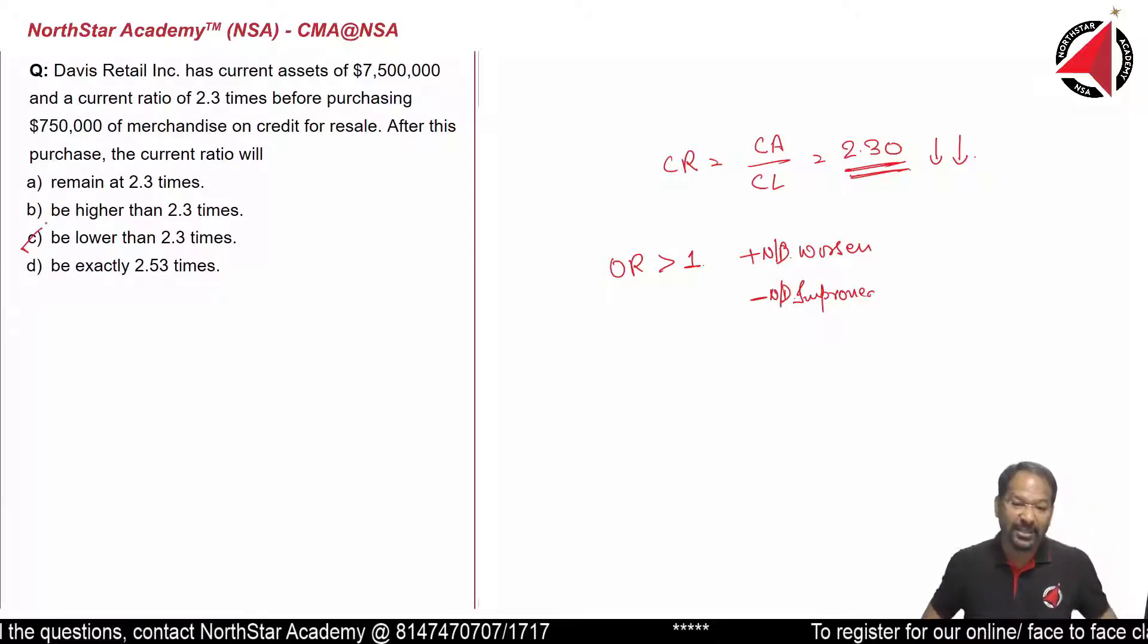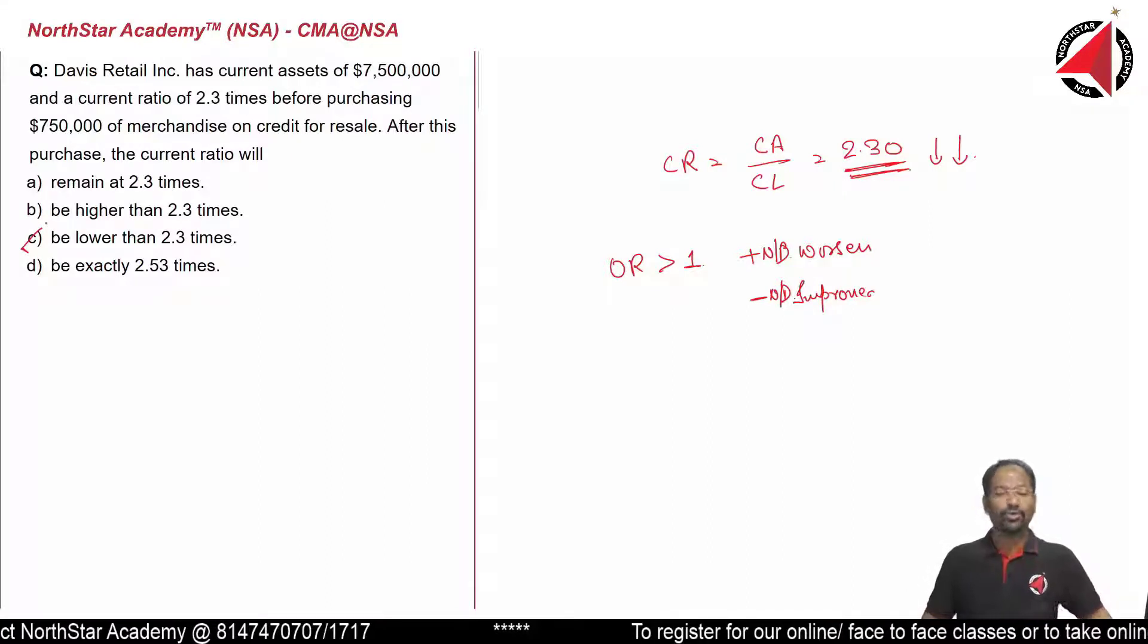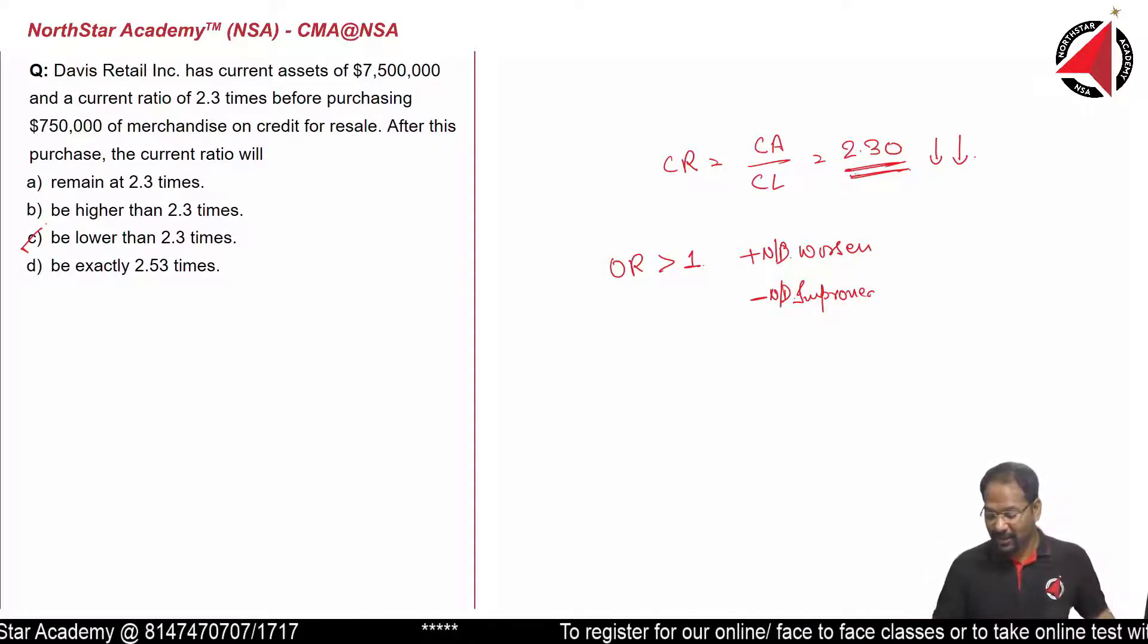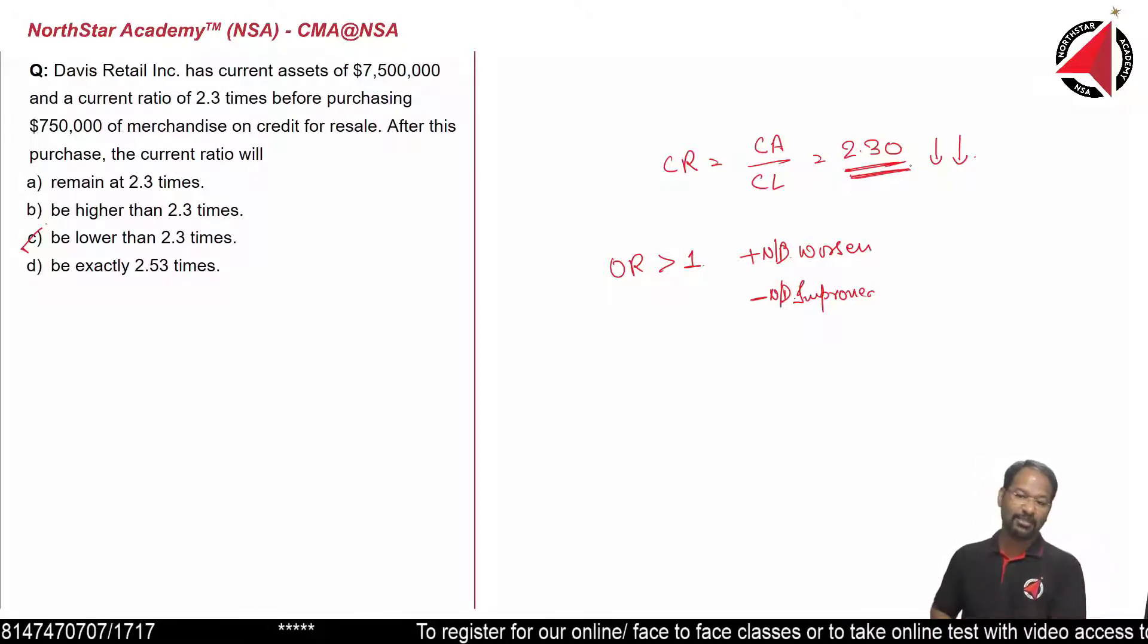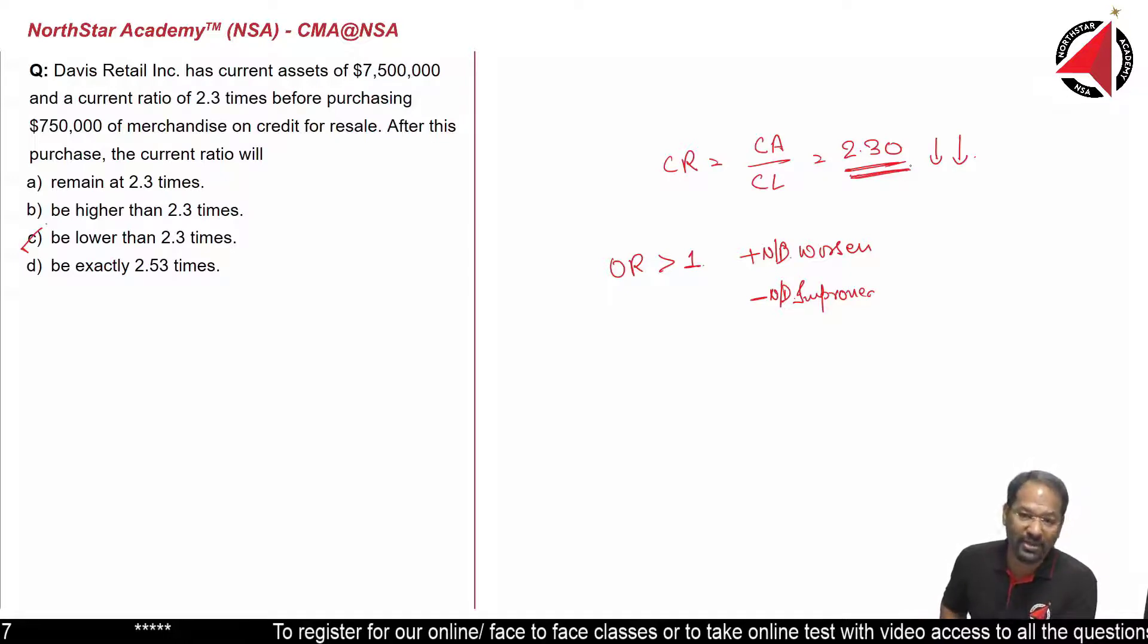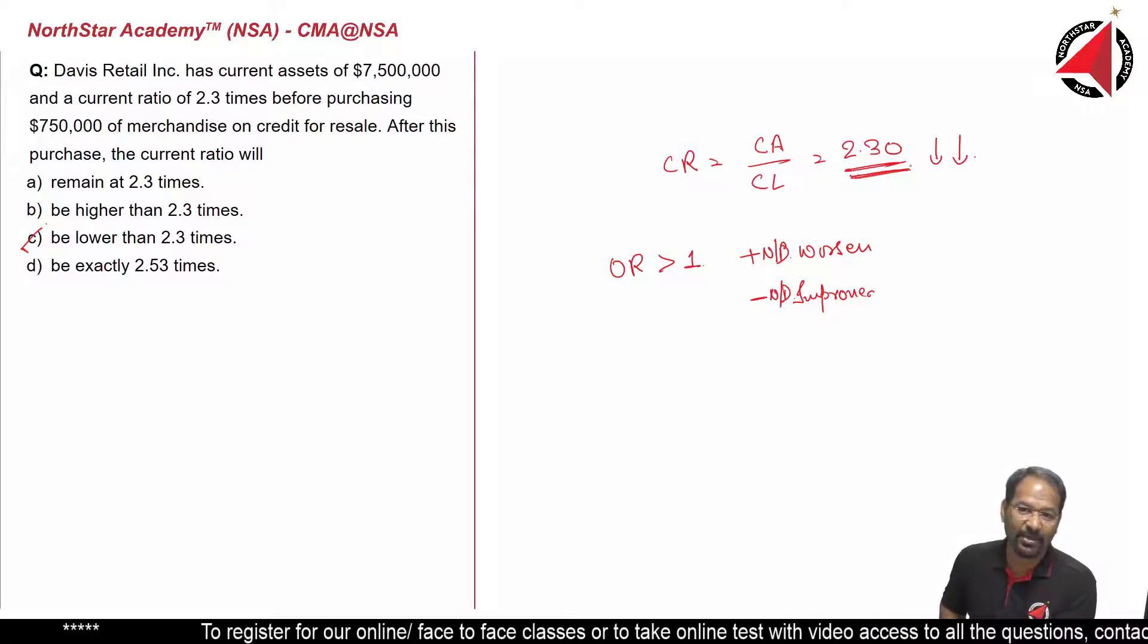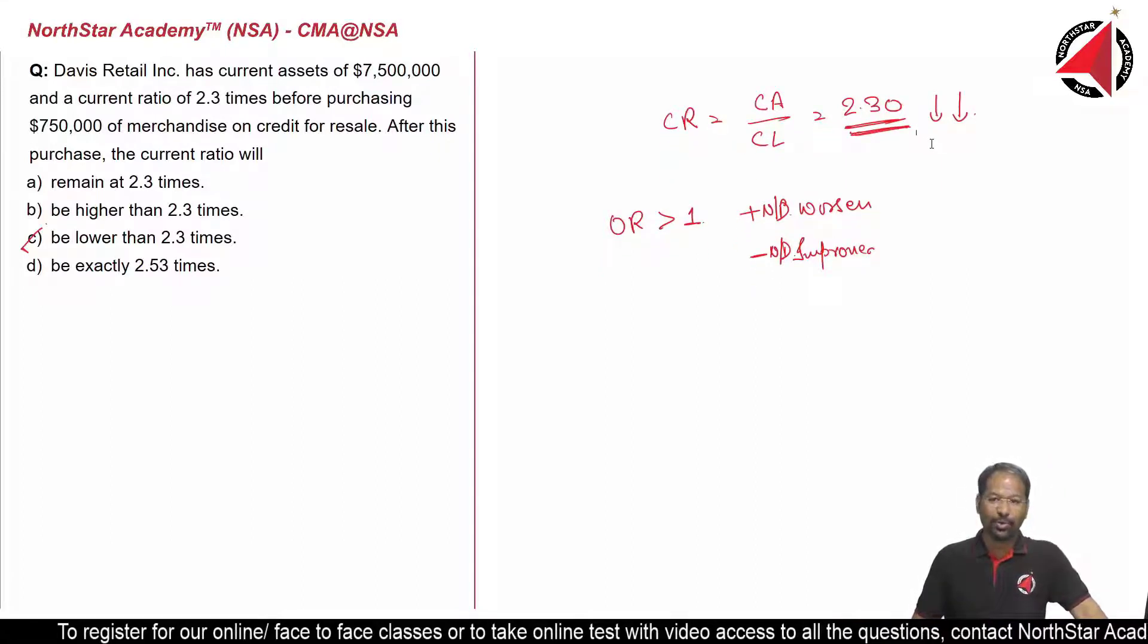Option D says exactly 2.53 times. Not possible. Why? Because this ratio will never improve if a constant number is added to both numerator and denominator, because the original ratio is greater than 1. So the correct option would be option C, lower than 2.3 times.